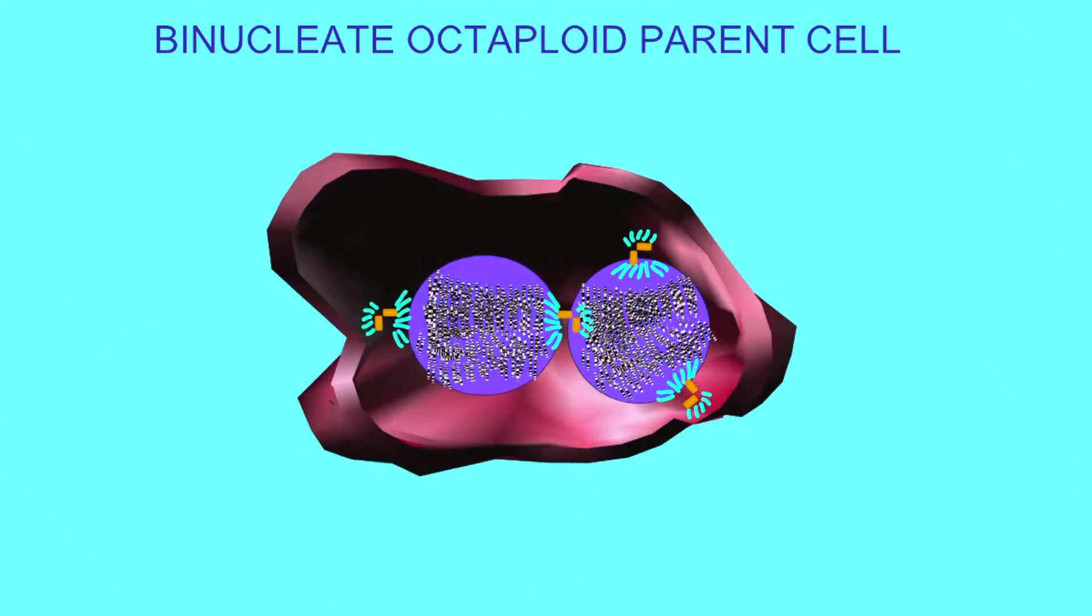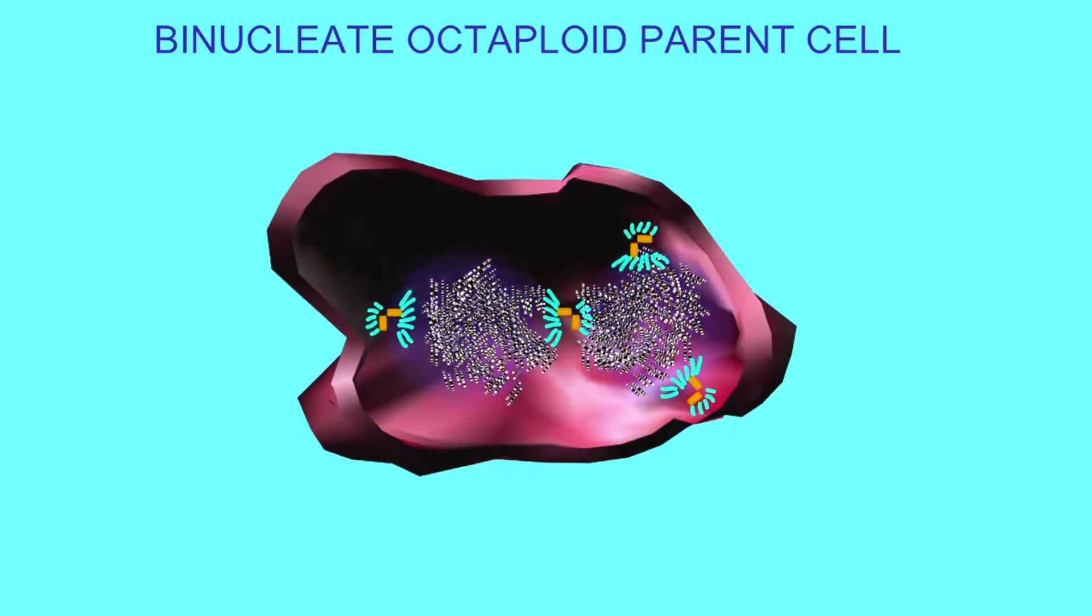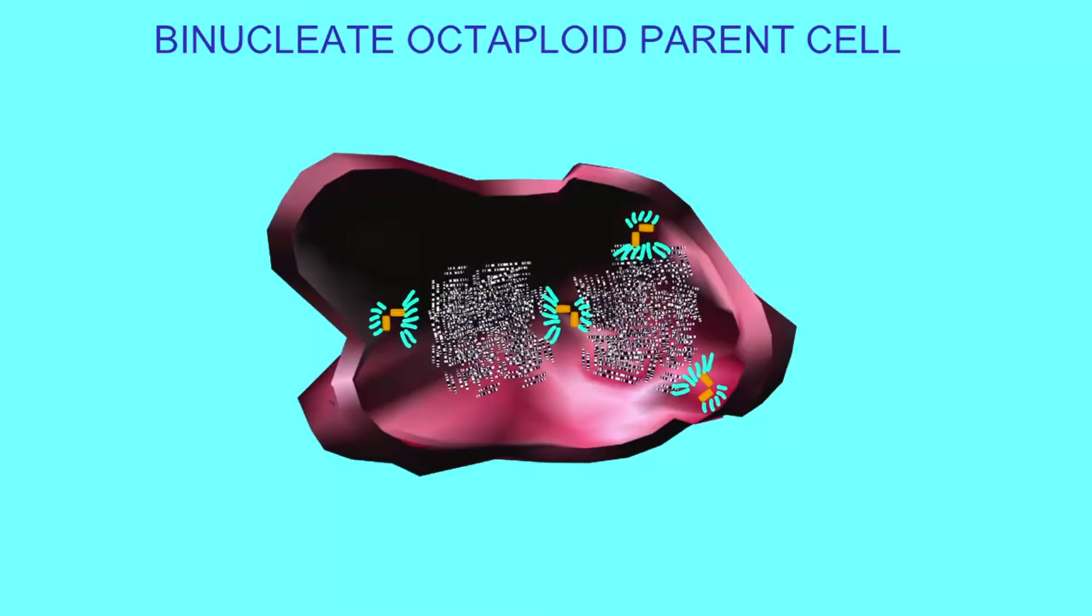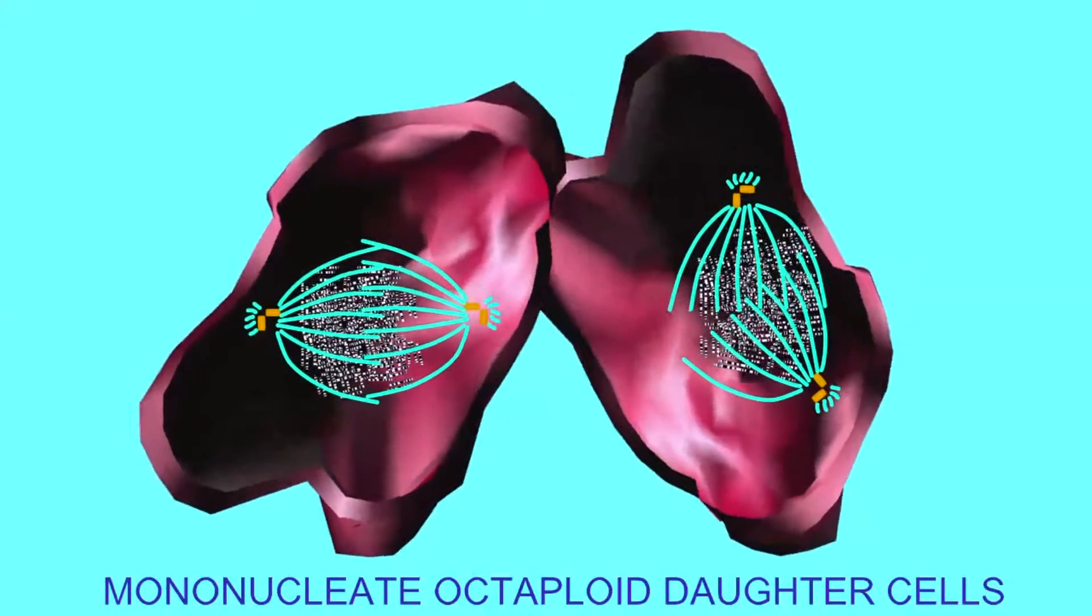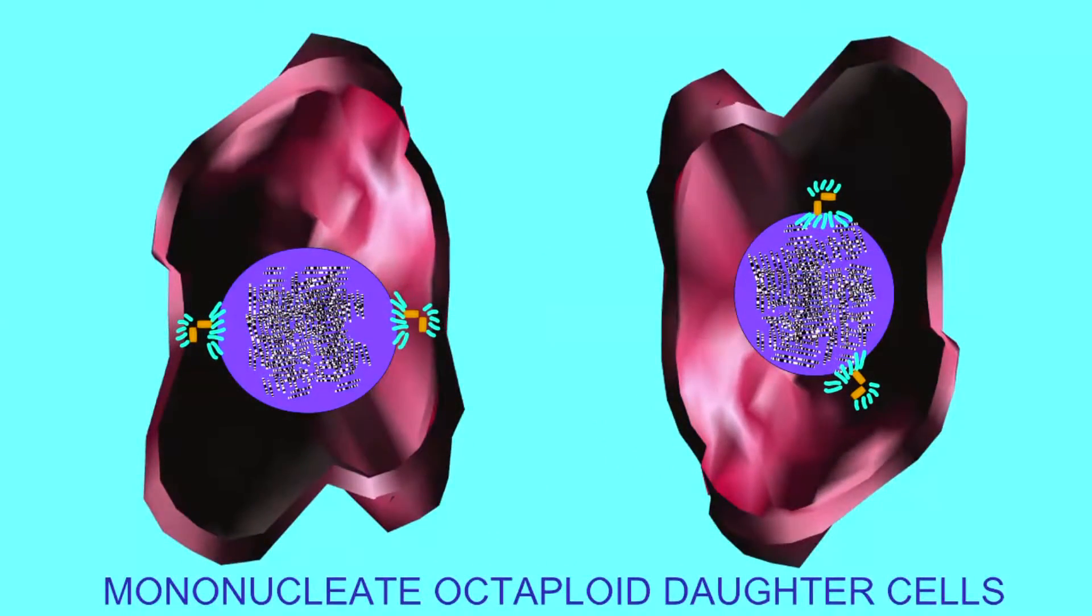The number of pairs of centrosomes can vary from hepatocyte to hepatocyte as well, and these undoubtedly influence the division of the chromosomes to form either binucleate or mononucleate daughter cells.